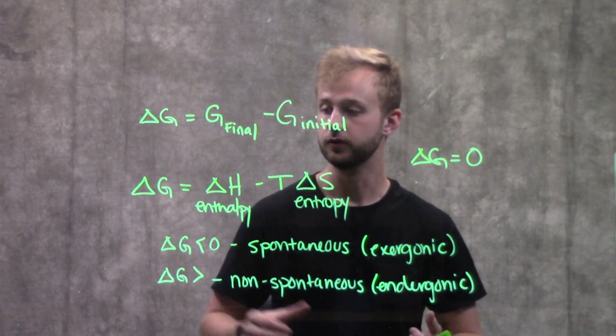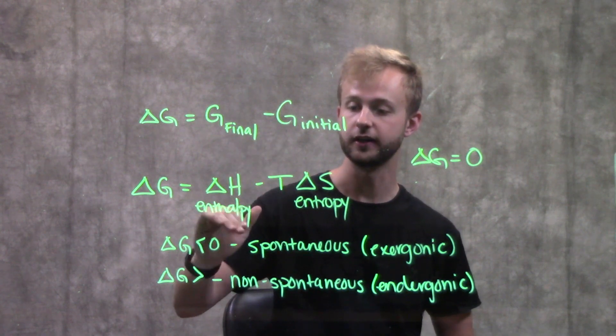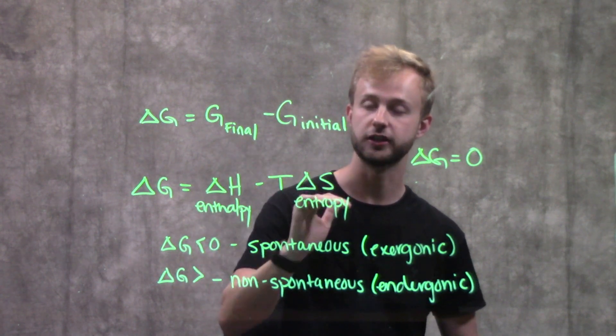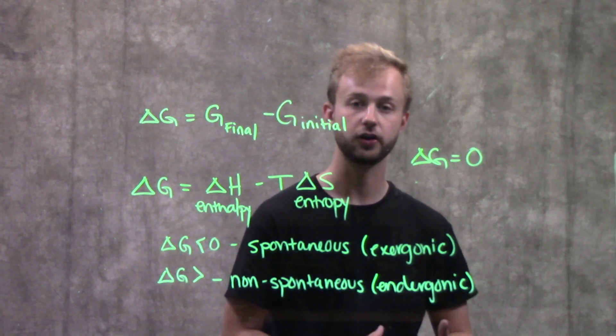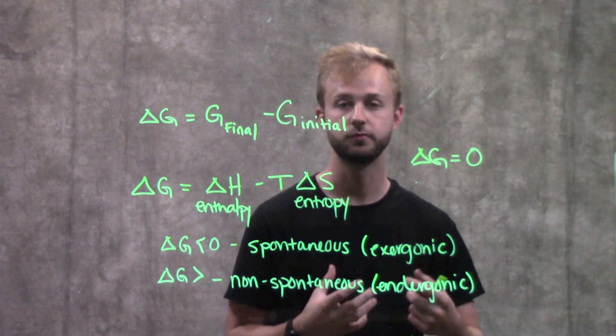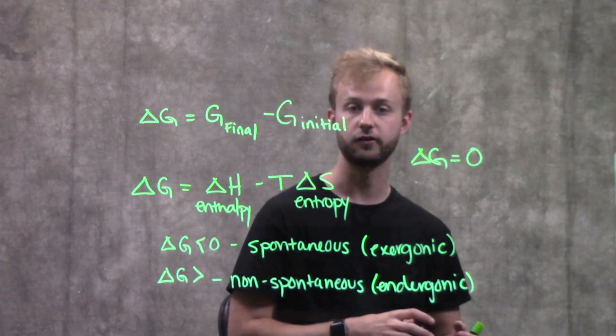So just to review, delta G is equal to our change in enthalpy minus the temperature times the change in entropy. If it's a negative number, it's spontaneous or an exergonic reaction. If it's a positive number, then it's going to be non-spontaneous or an endergonic reaction.